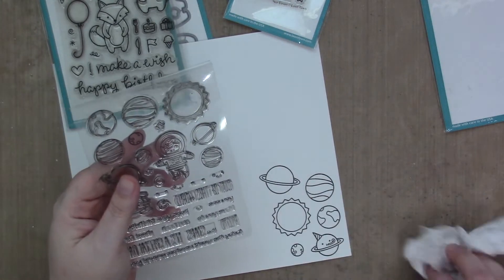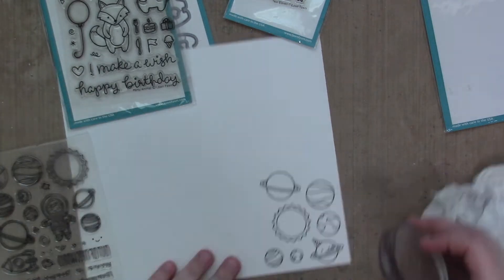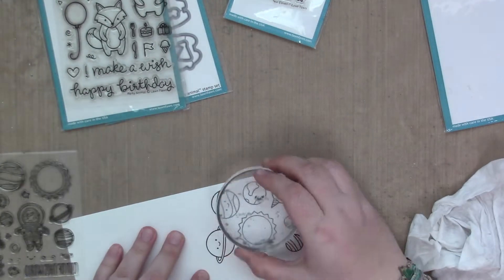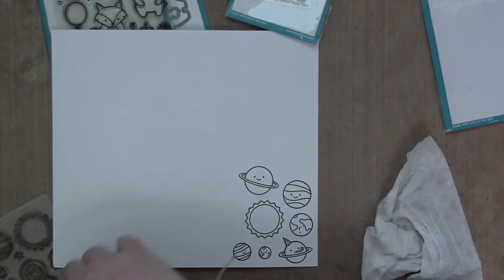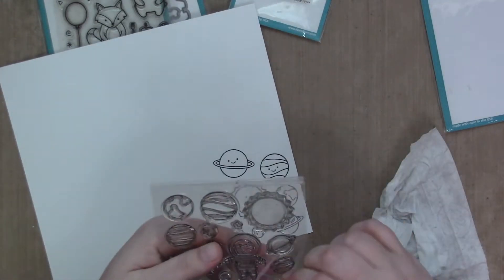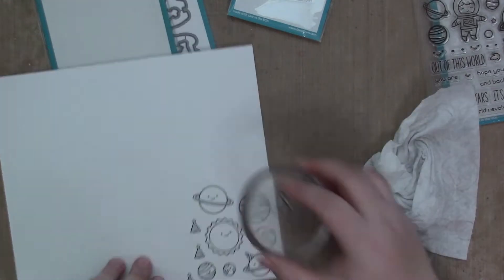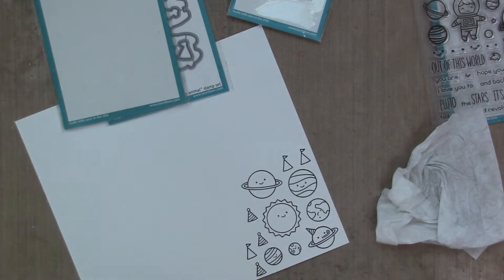Okay, so I'm going to start by stamping my images, as always. I am going to use Zig Clean Color Real Brush Markers to color these in. So I like to use a special paper, a vellum mixed media surface. This is the paper I like to use the most for zigs, because the color just glides on it like butter.